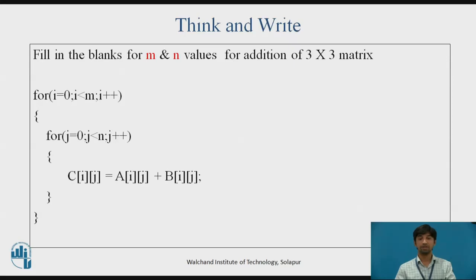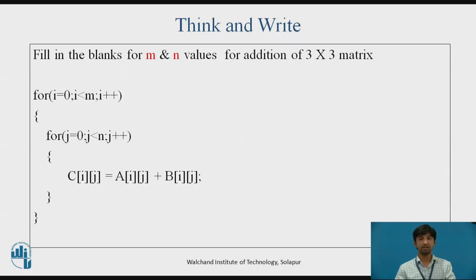Now pause this video for a few seconds and try to write the answer to the question: fill in the blanks for M and N values for addition of a 3×3 matrix. The loop structure is: for(i=0; i<M; i++) { for(j=0; j<N; j++) { C[i][j] = A[i][j] + B[i][j]; } }